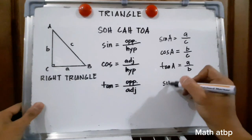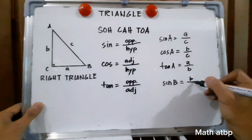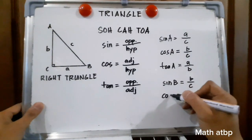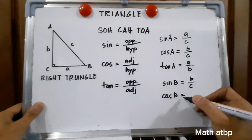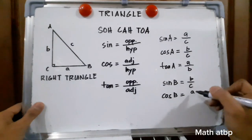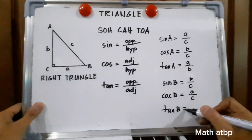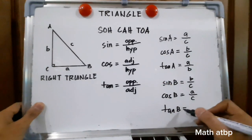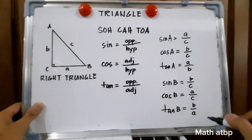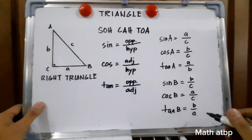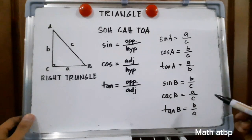The opposite of angle B is side B, and the adjacent of angle B is side A, while the hypotenuse is still side C. Sine of B is equal to opposite over hypotenuse, which is B over C. The cosine of angle B is equal to adjacent over hypotenuse, which is A over C. Tangent of B is equal to opposite over adjacent, which is B over A. Those are the formulas we'll be using in solving problems if the given is an angle and a side.